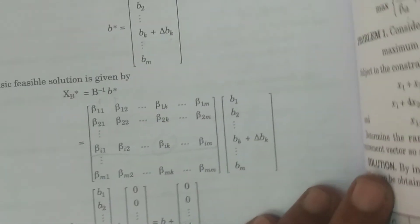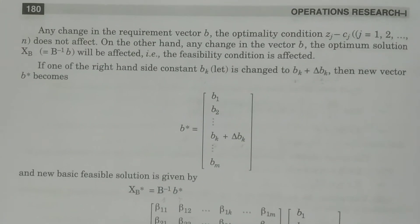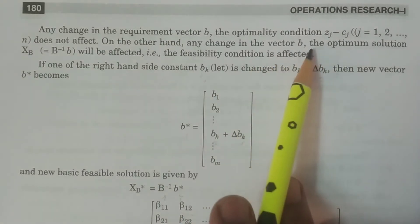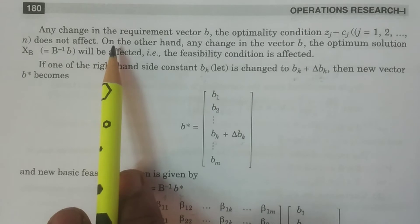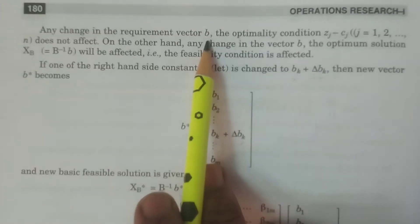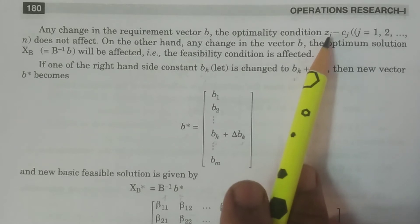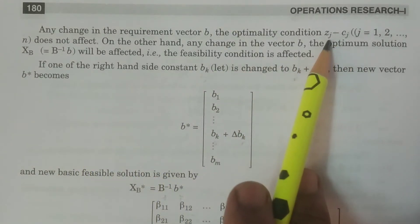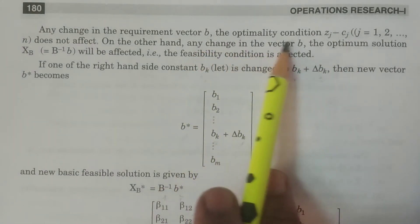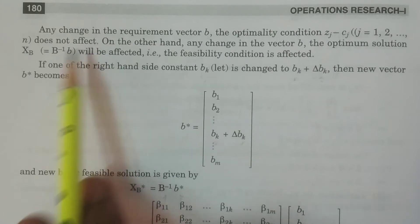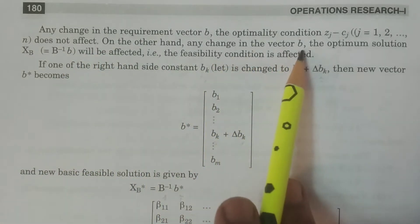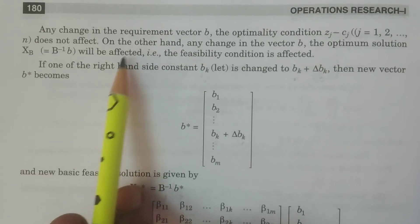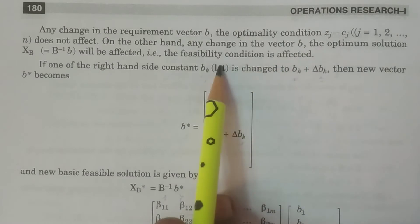If any change occurs in the requirement vector B, what would be the optimality condition? Obviously, if any kind of change occurs in the requirement vector B, the optimality condition — the net evaluation formula Zj minus Cj — will not be affected. That is because the Zj minus Cj formula is Cb·yj minus Cj, in which B is not present; therefore the optimality condition does not get affected. However, any changes in vector B will affect the optimum solution, that is xB equal to B⁻¹B, so the feasibility condition is going to be affected.